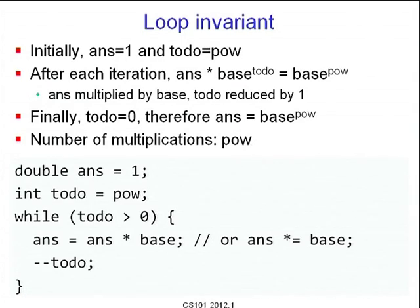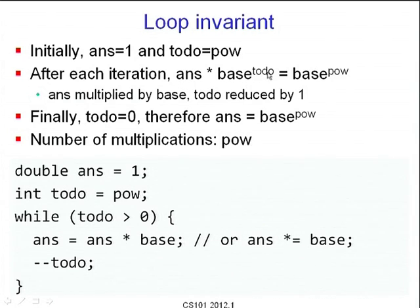This is obviously correct, but it is interesting to prove correctness using a loop invariant. Initially answer = 1 and todo = pow. You can convince yourself that after any number of iterations, the quantity 'answer * base^todo' equals 'base^pow'. This formal statement says iterations do not change this relationship between variables.